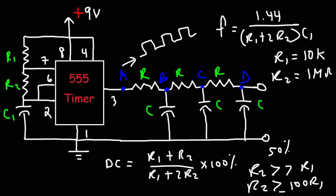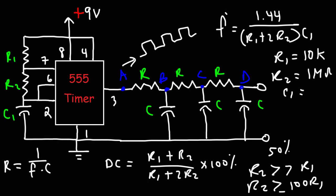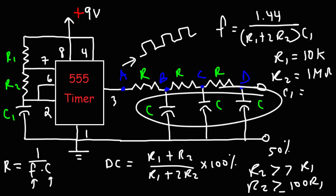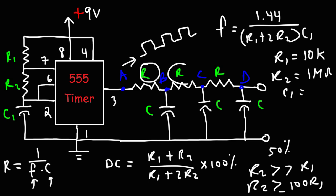Now that you know R1 and R2, you can adjust C1 to get the appropriate frequency. Once you have your value of C1, you'll have a square wave with a certain frequency. From there, choose your R values for the RC filter stages using R ≈ 1/(FC), where F is the frequency from the 555 timer. Plug in F with a chosen C value for the three capacitors to determine the appropriate R, so you can get a triangular waveform at point B and a sine wave at point D.